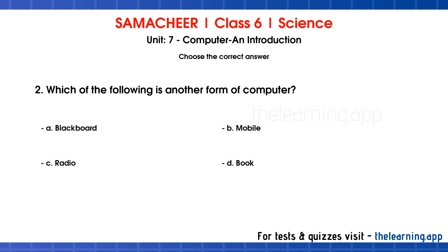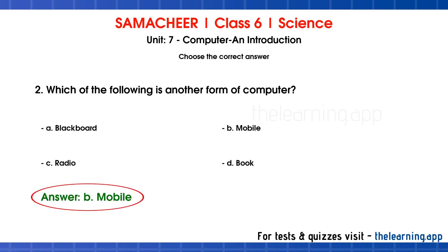Second question: Which of the following is another form of computer? Options are A. Blackboard, B. Mobile, C. Radio, D. Book. The correct answer is Option B, Mobile. All electronic devices are considered a form of computer, and mobile is an electronic device, so it is also a form of computer.